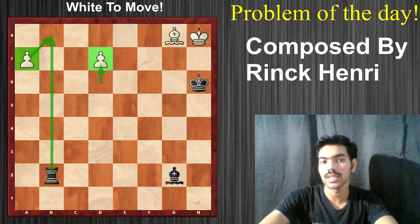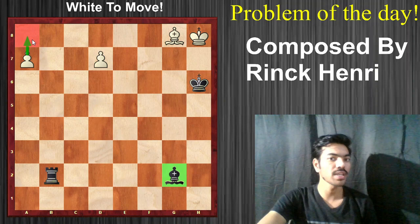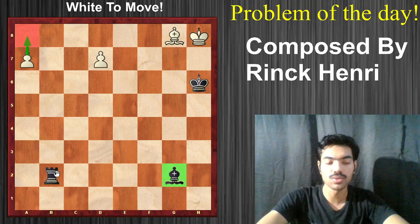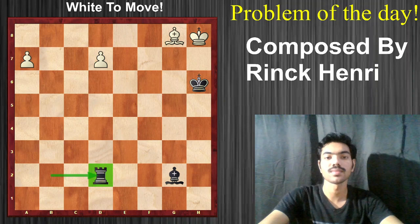How do we stop the d-pawn? Rook to b8 is again not playable because the pawn will capture. The bishop is already doing a task — it's controlling the long diagonal and keeping an eye on the a8 square, so it can't do anything else. The bishop obviously can't stop the pawn. The only option for black is to play rook to d2, but does this work?